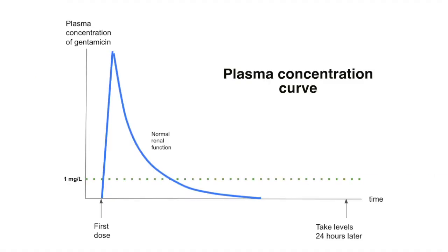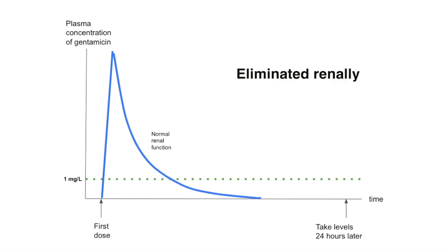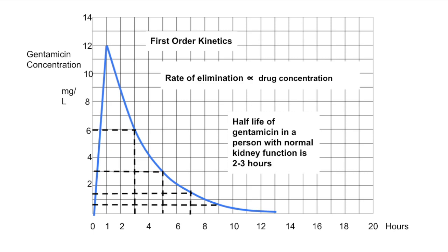This is a plasma concentration curve for gentamicin and it's a standard exponential first-order decay curve. On the left-hand side you've got the plasma concentration and here is where you inject the dose. If you're giving a small dose it can be given as a bolus injection; if you're giving a large dose it needs to be infused over one hour, and once the dose has been administered it starts to be eliminated renally straight away. This is a classic first-order kinetics curve where the rate of elimination is proportional to the drug concentration.